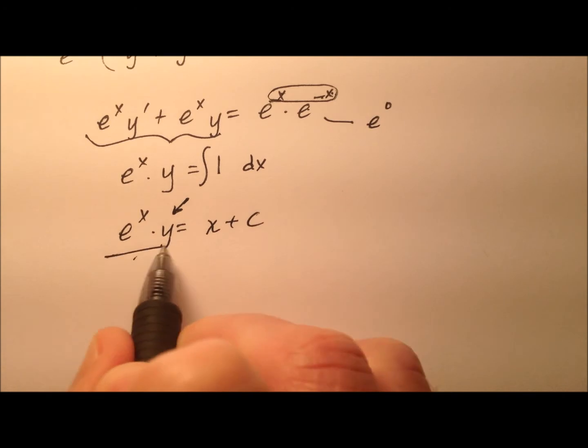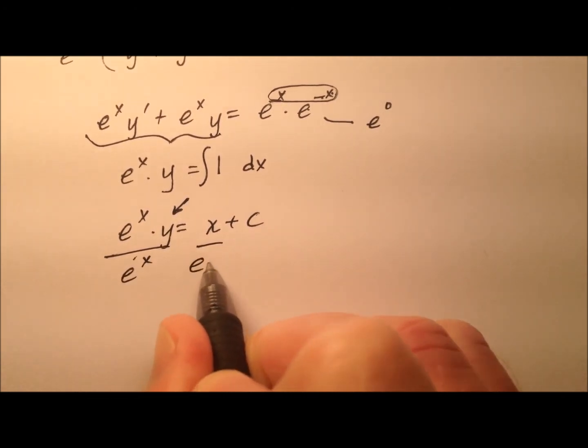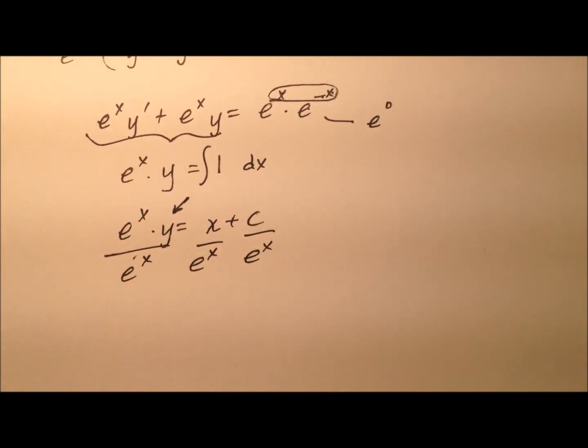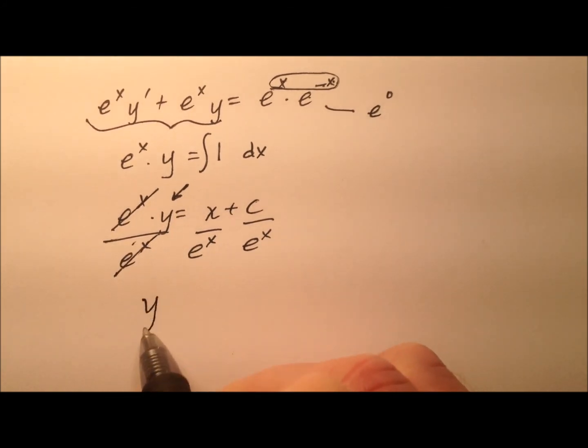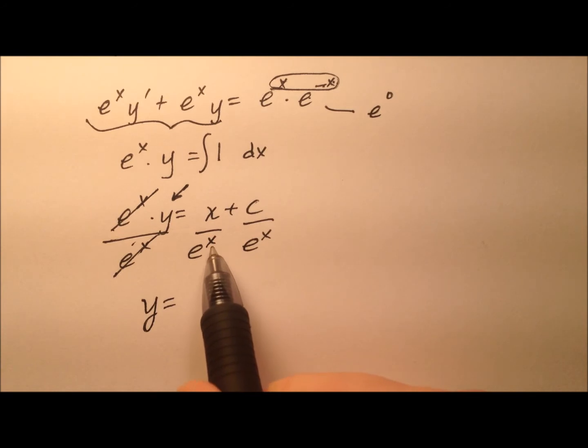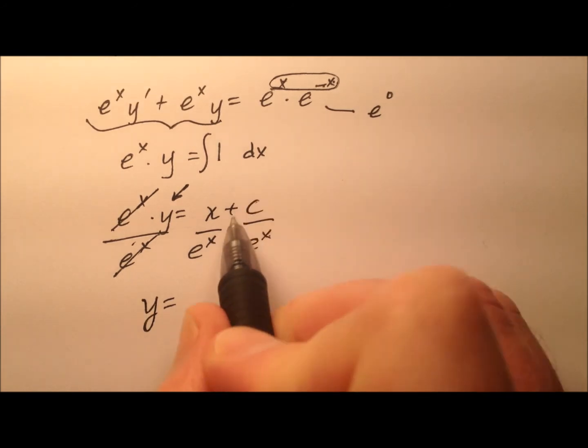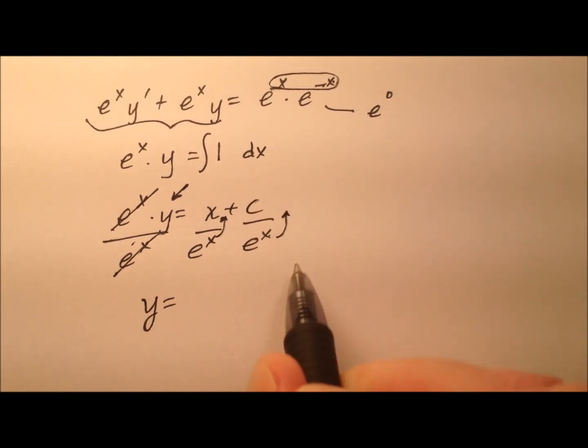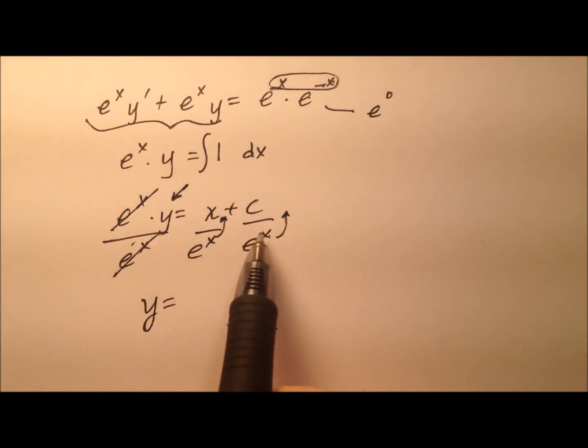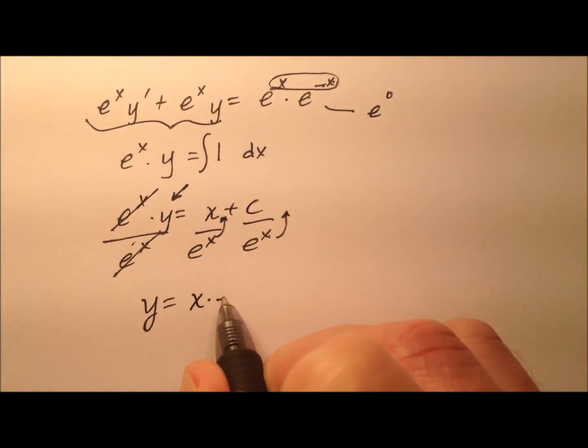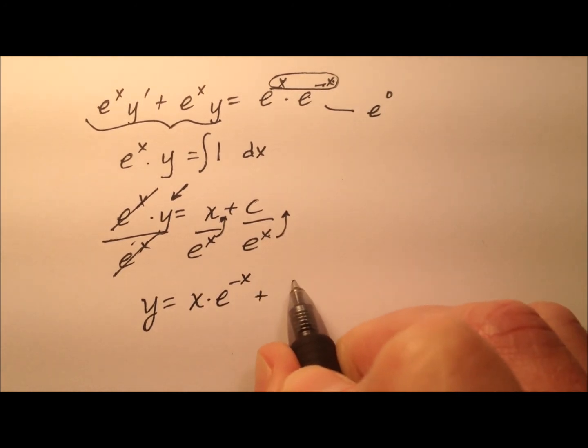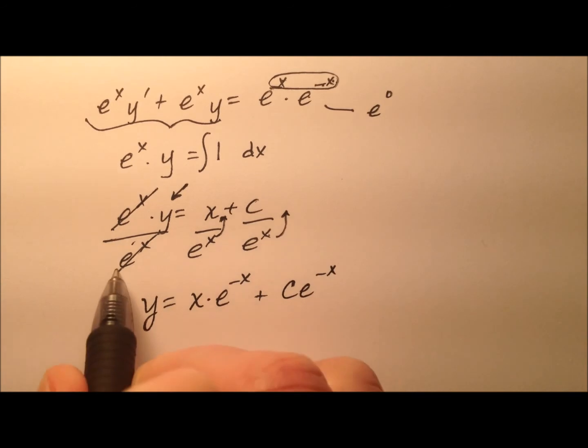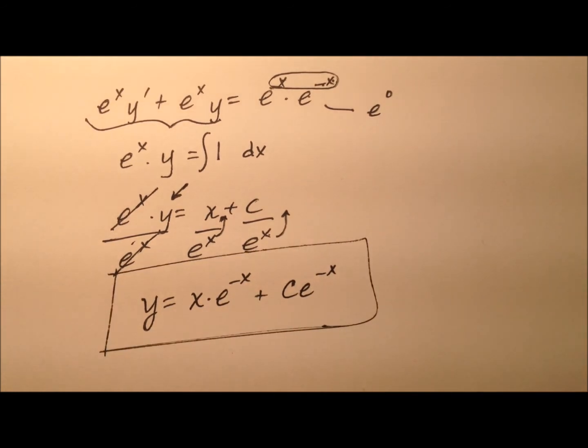So solving for y, I'm going to divide every single term by e^x, and the e^x's cancel here. And it looks like y equals, and what I'm going to do, instead of having these e^x's in the denominator, I'm going to bring them up and change their exponent from a positive x to a negative x. So it'll be e^(-x) times my x, and then plus c e^(-x). And this will be my solution.